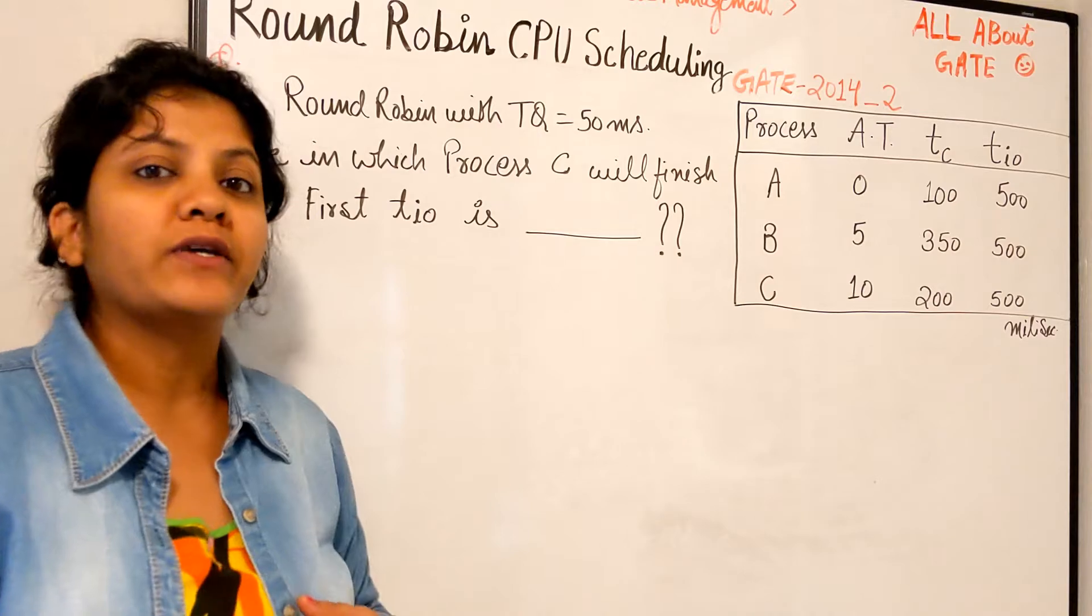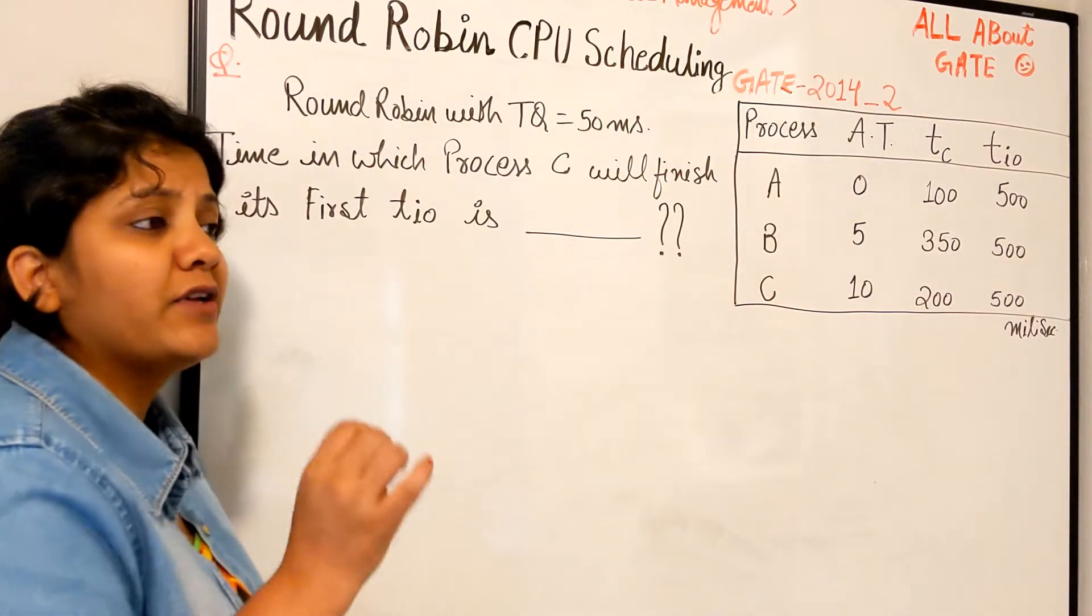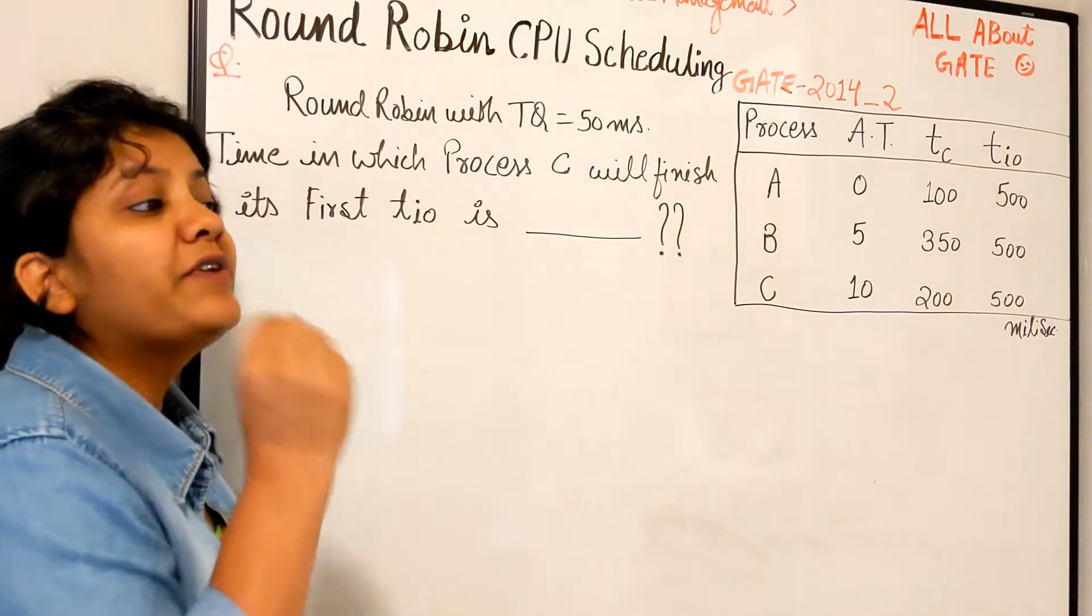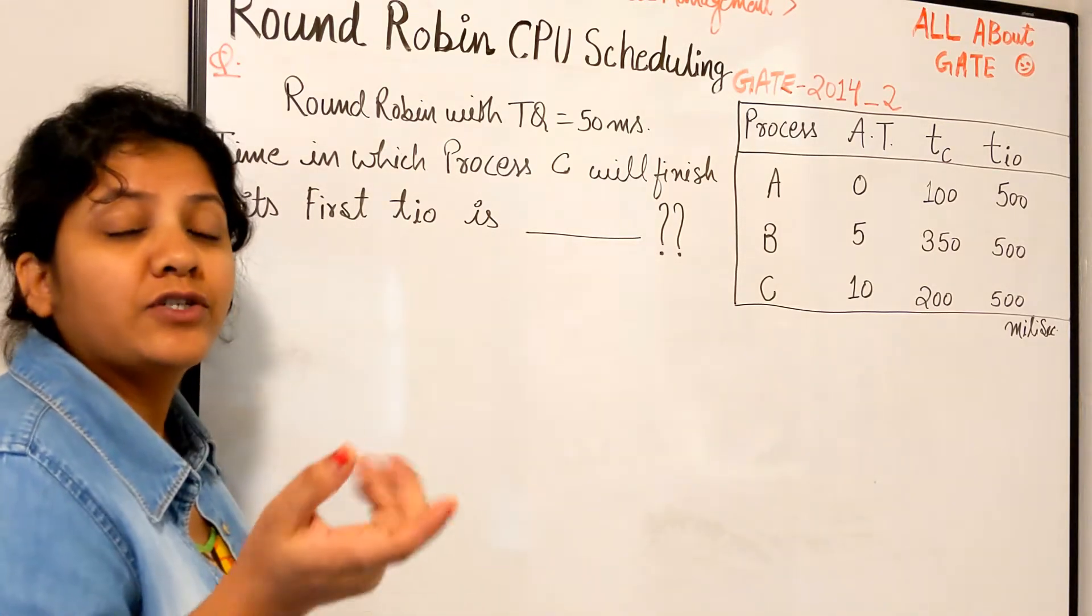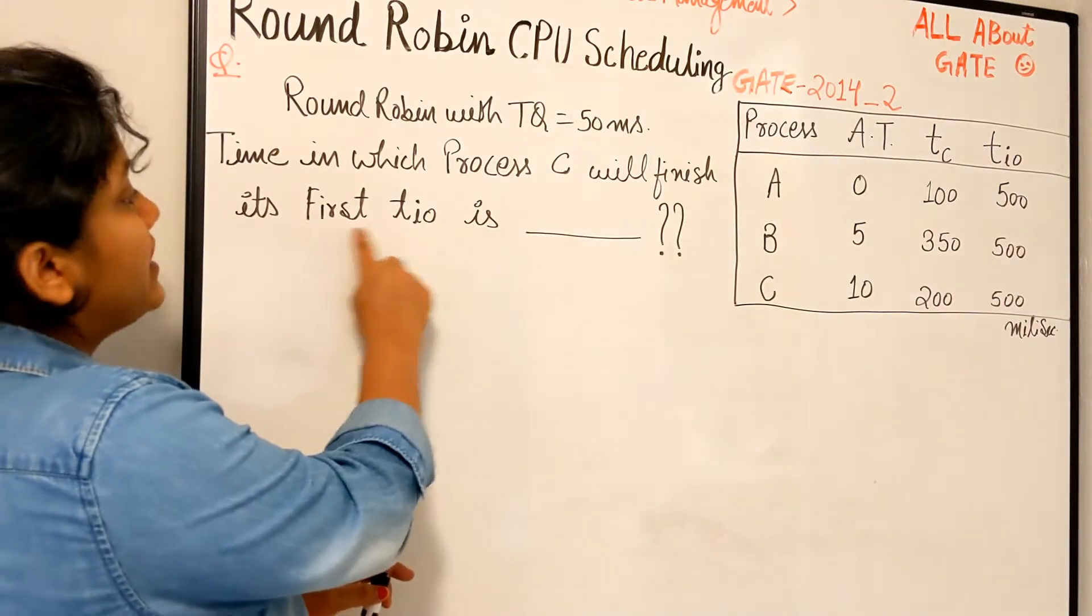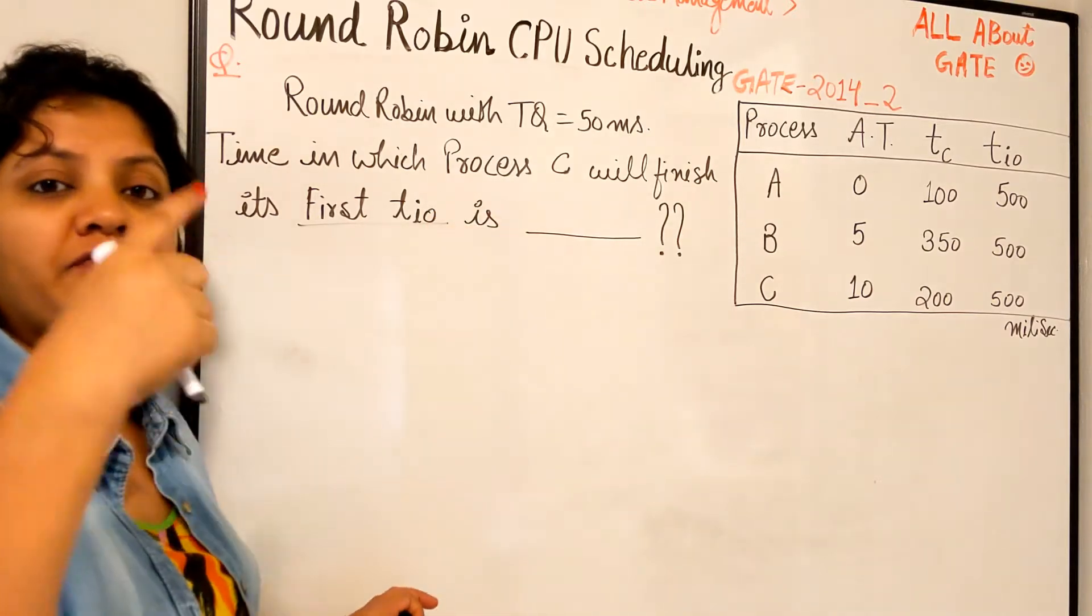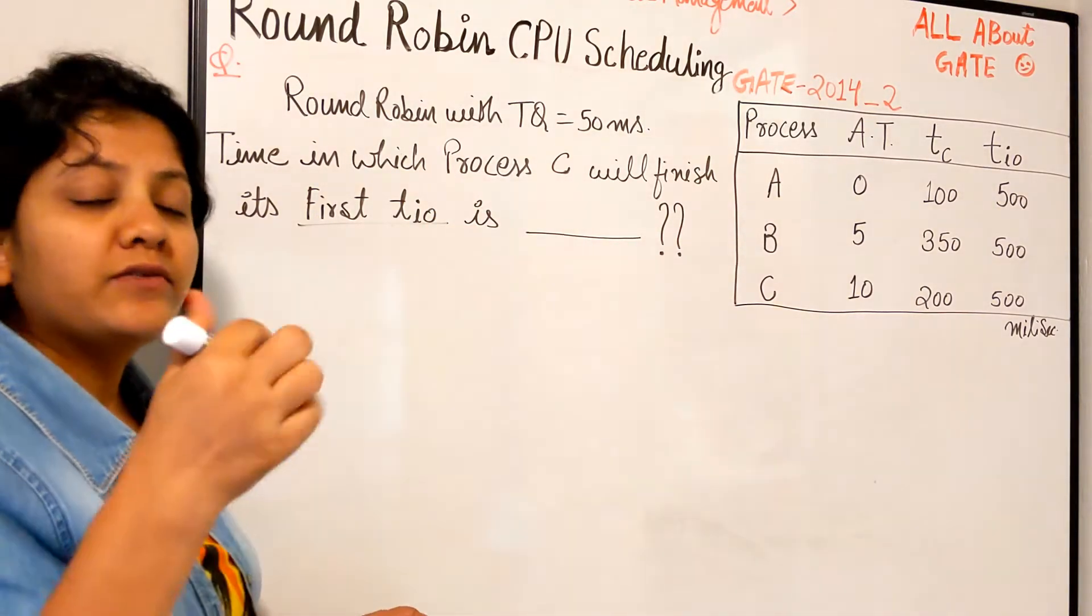All right, so yes, they have given that it has 100 iterations, but we don't have to execute all the 100 iterations in the loop. The question is asking the very first IO. So when C should do it for the first time in the first iteration.